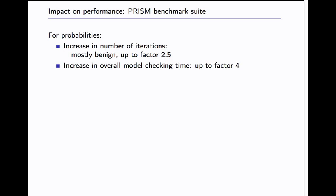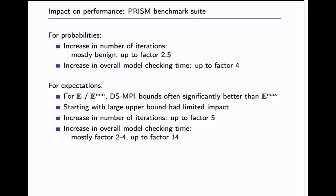What we see for probabilities is that the increase in number of iterations for the PRISM benchmark suite models is mostly benign. We get something like a factor of up to 2.5 in the worst case. The increase in the overall model checking time in the worst case is also just a factor of 4. For expectations we see that for DTMC expectations and E_min the Dijkstra sweep algorithm, the bounds obtained by Dijkstra sweep algorithm is often significantly better than what we have for the E_max upper bounds.